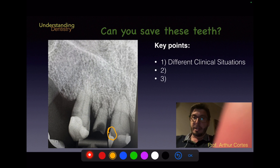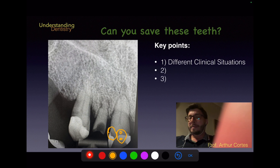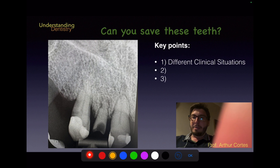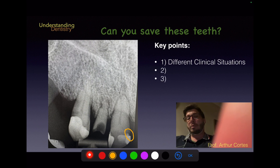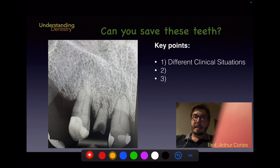This radiolucent line can appear when too much bonding or primer material is placed — so it depends on the clinical procedure. There's also a very thin radiolucent line between the restoration and dentine, which could simply be the thickness of a liner, bond, or primer. Additionally, there is a lack of adaptation of the restoration — possibly the matrix was not used properly. This could be monitored depending on the clinical situation.